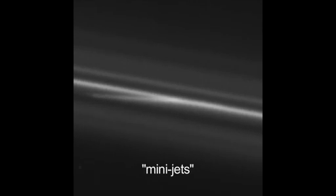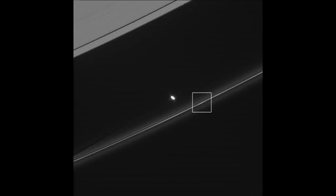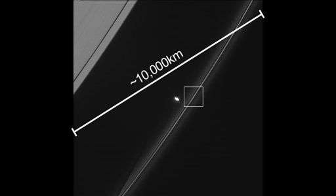Cassini scientists have been calling these trails mini-jets. They look tiny because in the full image you're looking along about 10,000 kilometers of the F-ring.